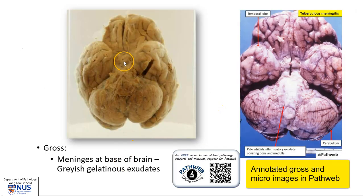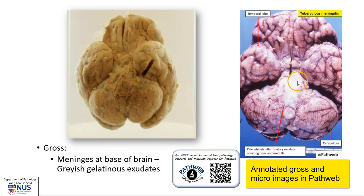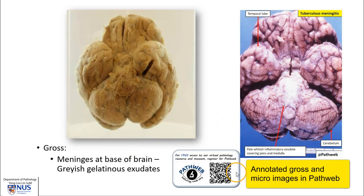Grossly, at the base of the brain and also sometimes over the cerebral hemispheres, we will usually see these gray gelatinous exudates. They can also appear to be yellowish or whitish, and sometimes with nodular granular areas. The gross appearance is described in a separate video available in our virtual pathology museum in PathWeb.